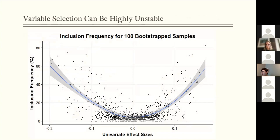So on the x-axis here, we have the univariate effect sizes of each variant. We bootstrap the original data set 100 times and apply LASSO to each of the bootstrap samples. So the y-axis here shows how often a SNP gets selected. And we can see that the inclusion frequency is positively correlated with the effect sizes, as it should.